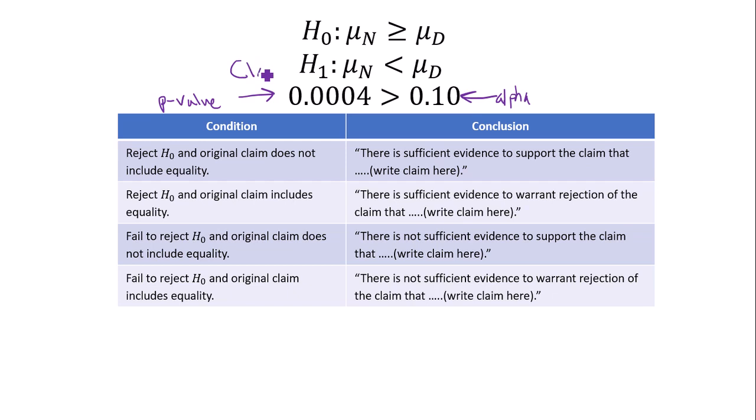Remember my claim is the alternative hypothesis. The p-value is greater than alpha, so I must fail to reject the null hypothesis. So I failed to reject the null hypothesis and the original claim does not include equality, so that puts me in row three.